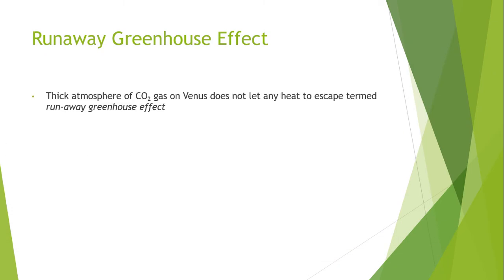A runaway greenhouse effect occurs when a planet's atmosphere contains greenhouse gas in an amount that is sufficient to block the thermal radiation being emitted from the planet. This effect prevents the planet from cooling and having liquid water on its surface. A runaway version of the greenhouse effect can be defined by a limit on the planet's outgoing long wave radiation, which is asymptotically reached due to higher surface temperatures by boiling condensable water into the atmosphere, increasing its optical depth.